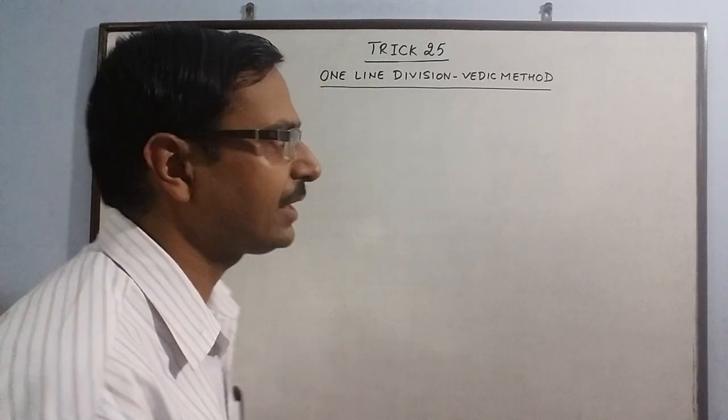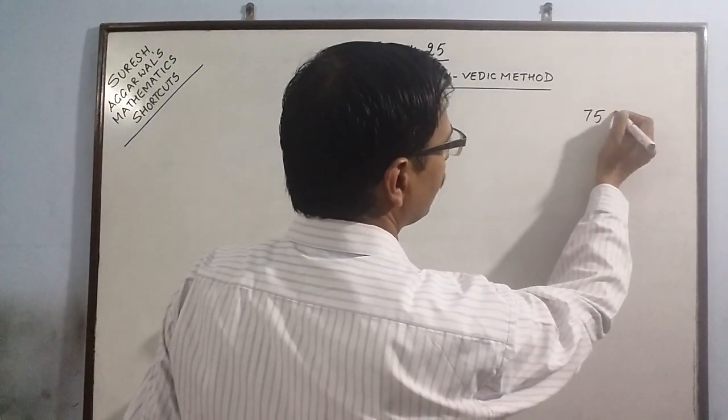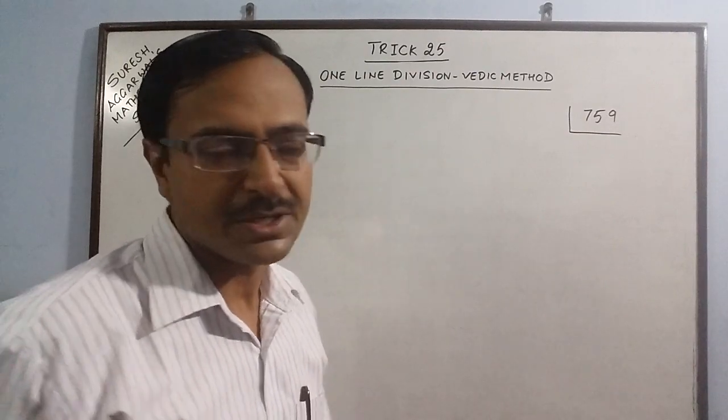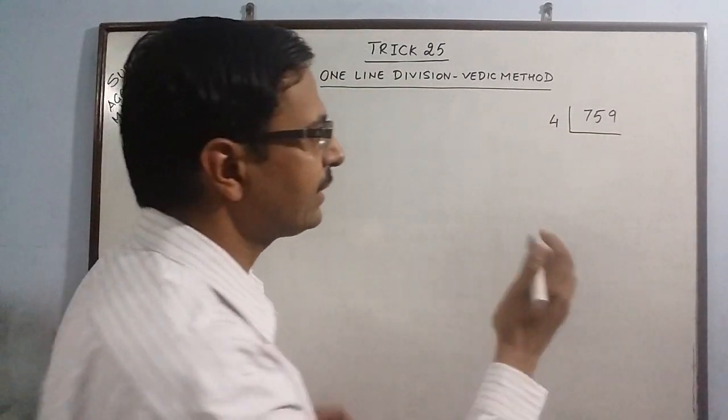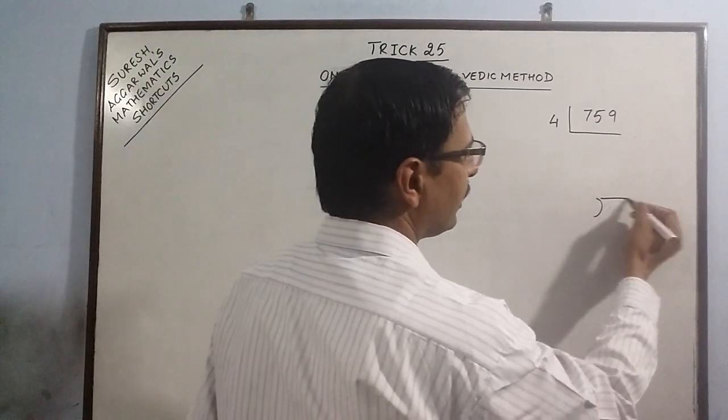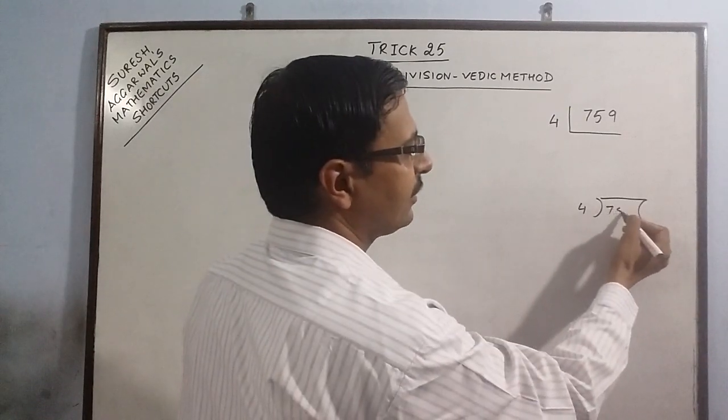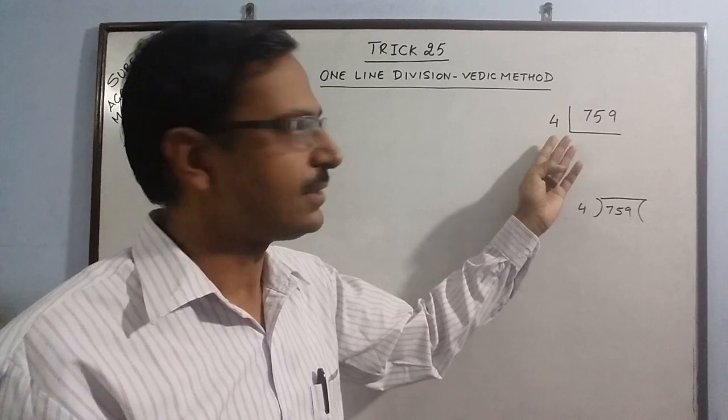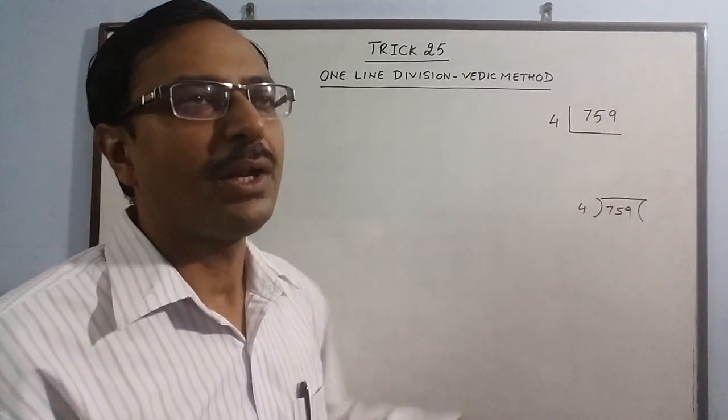I am demonstrating today one line division by Vedic method. First I will take division by a single digit. Say I am taking the example of 759 to be divided by any random single digit number, say 4. Instead of writing the traditional division sign like this, where we write the divisor here and the dividend here, I am just writing the division sign as this. So this is the divisor and this is the dividend.